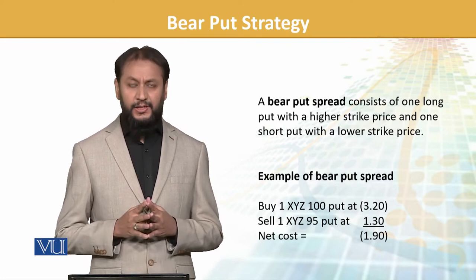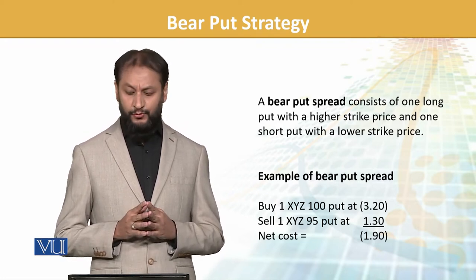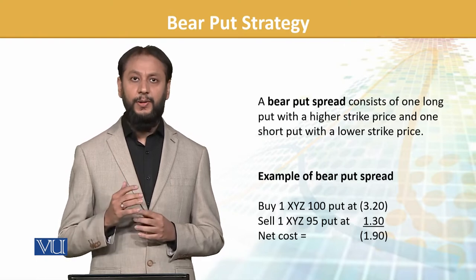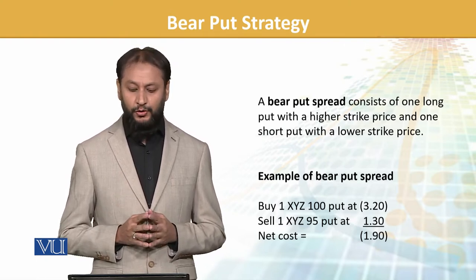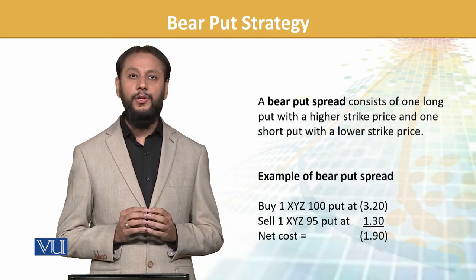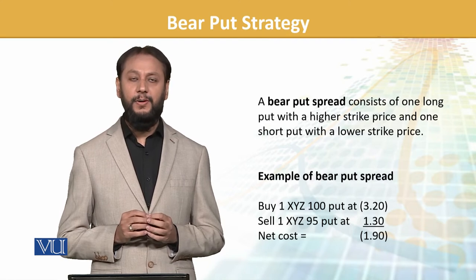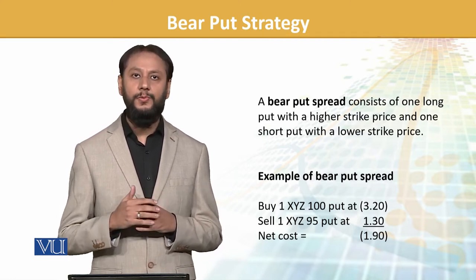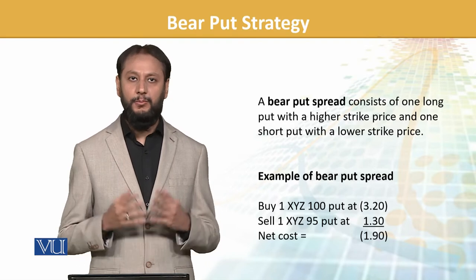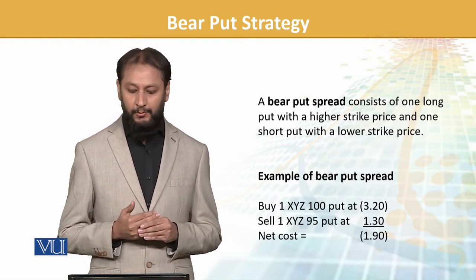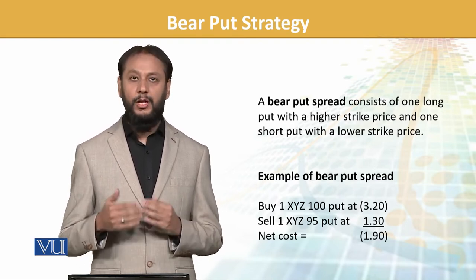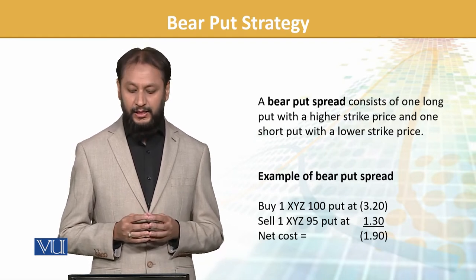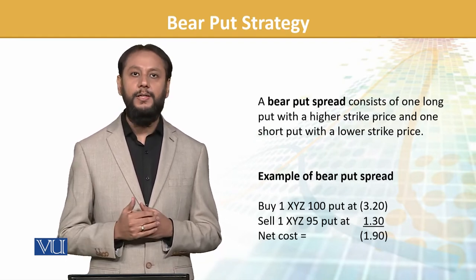A bear put consists of one long put with a higher strike price and one short put with a lower strike price. We are buying a put option and simultaneously selling at a low strike price.